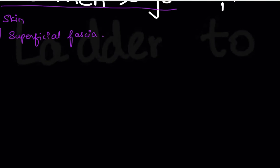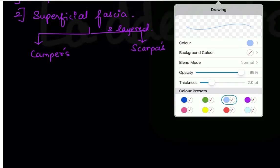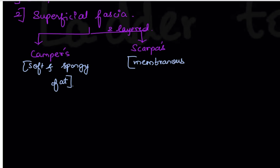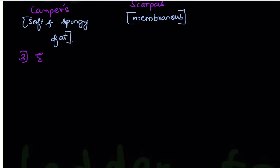The superficial fascia is two-layered — you must know both layer names. One is Camper's fascia and another is Scarpa's fascia. Camper's fascia is soft and spongy fat, while Scarpa's fascia is membranous.